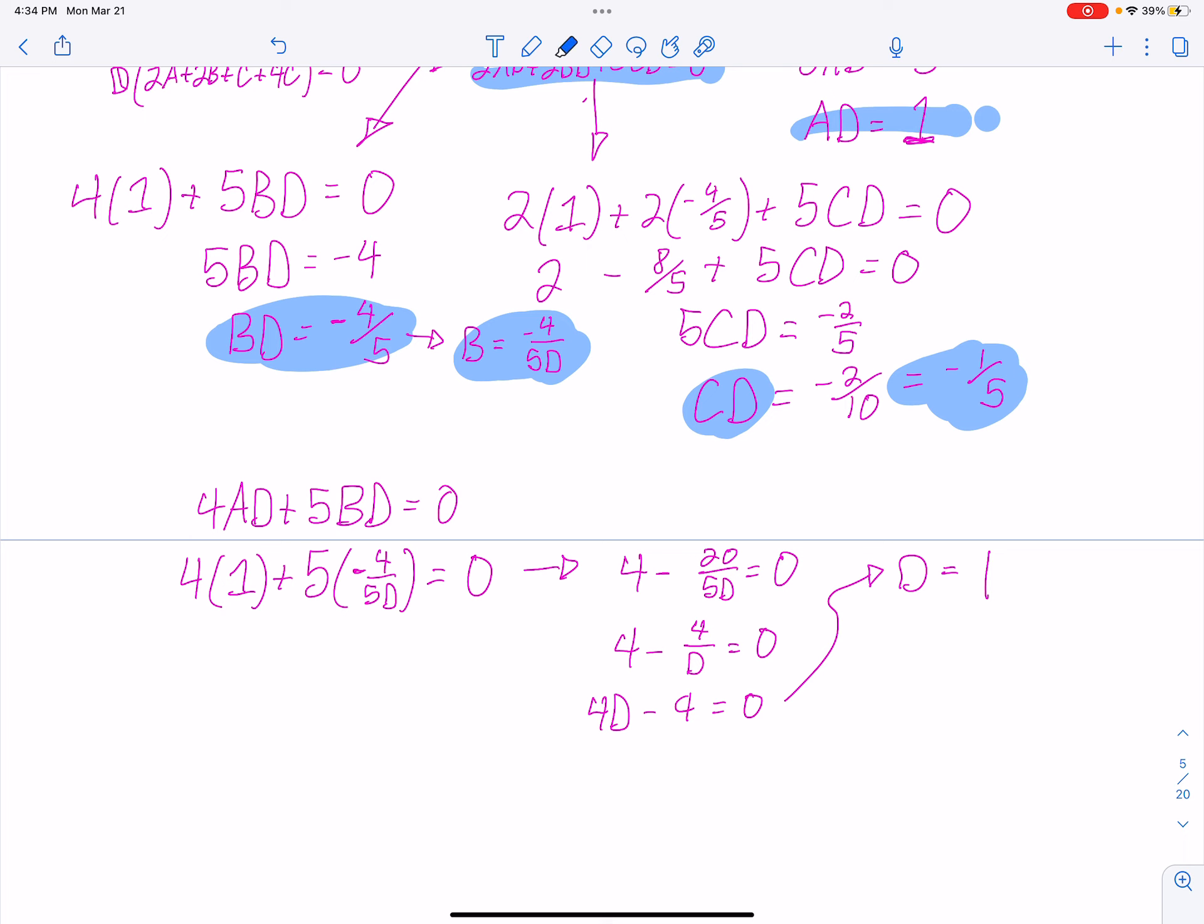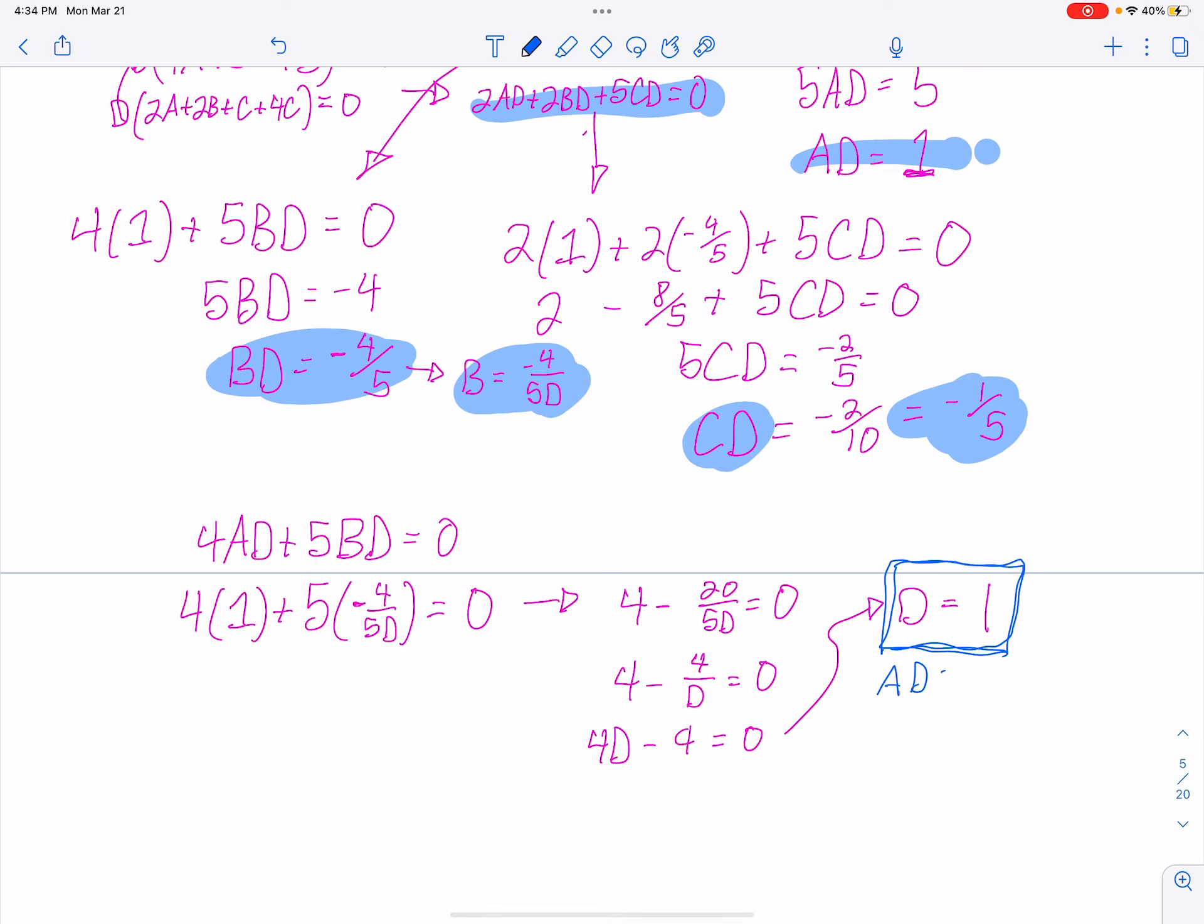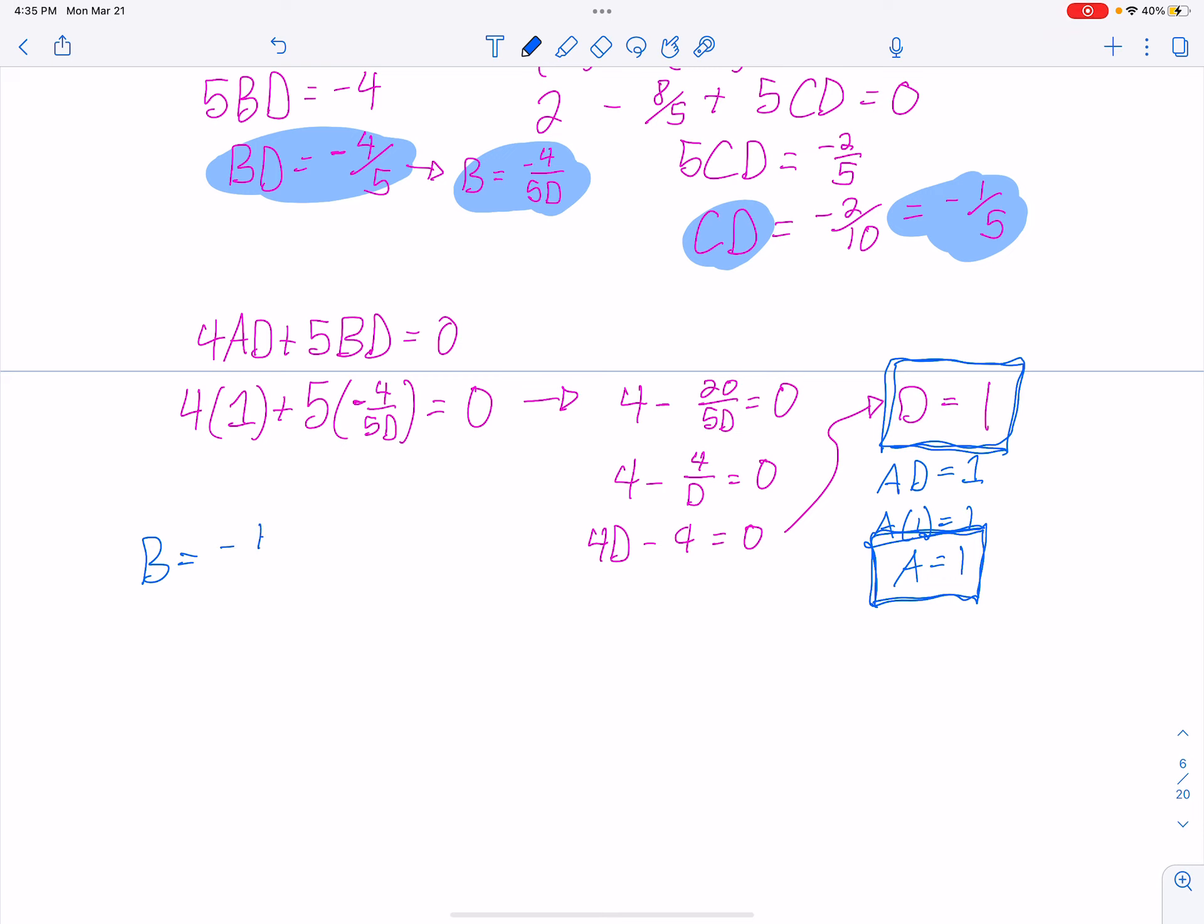So now I have D, which means I can find a couple things. D is 1. I also now can find A. If I use AD equals 1, and I plug in D, so A times 1 equals 1, which means A is also equal to 1. And then we can find B. We have a formula for B already. B equals -4/(5D). So that's -4/(5 times 1), which means B is -4/5. And then we can find C by plugging in D to the last one. So CD equals -1/5. If I plug in D, I get C equals -1/5.